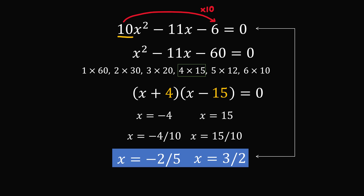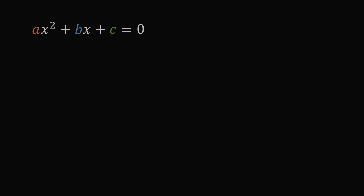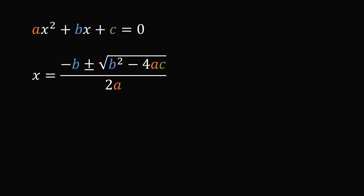Wonderful! The first time I saw these examples I was in disbelief. We got the right answers, but I didn't understand why these tricks worked. So let me give a little justification for why these mysterious tricks actually work mathematically. Start with a general quadratic equation: ax squared plus bx plus c equals 0. We can solve for the roots using the quadratic formula: x equals negative b plus or minus the square root of b squared minus 4ac, all over 2a. Now what happens if we slide the coefficient of a to the constant term c?